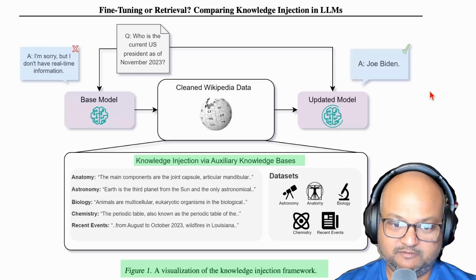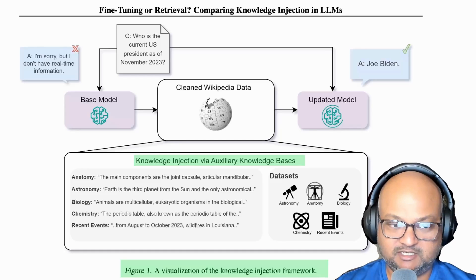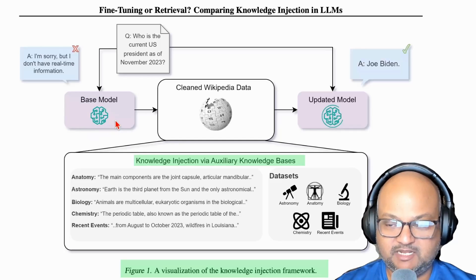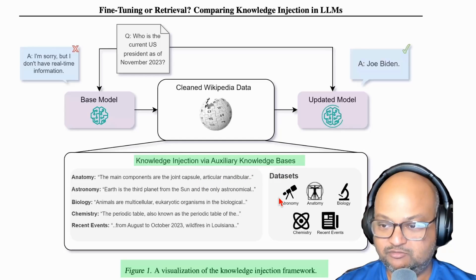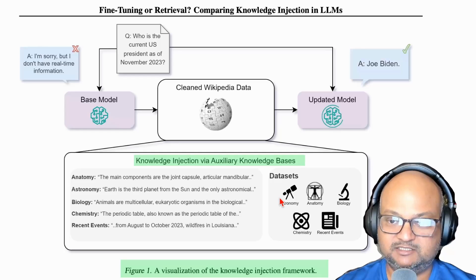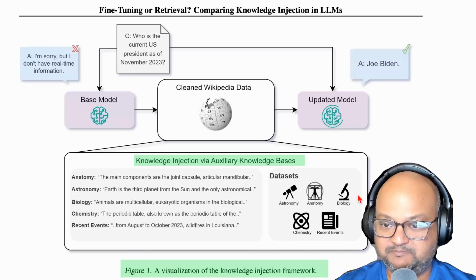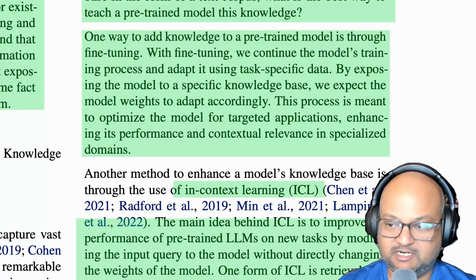The problem we're trying to solve is one of the very basic problems when using LLMs: you want to use it for some very specialized domain, or with current events that are past the knowledge cutoff date of the corpus that was used to train the model. So the question is, how do you add this new knowledge or specialized knowledge for a very specific domain to the LLM?